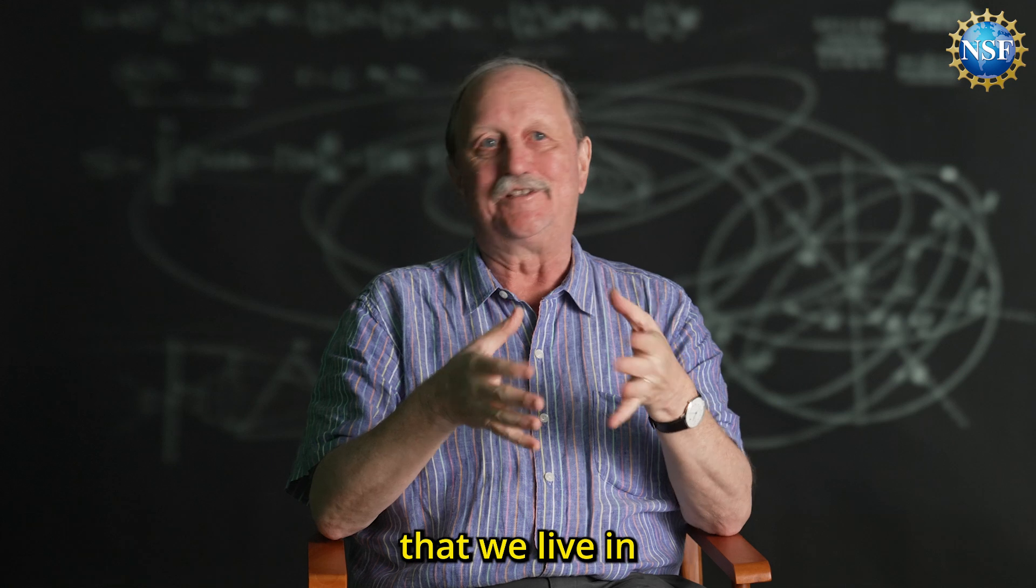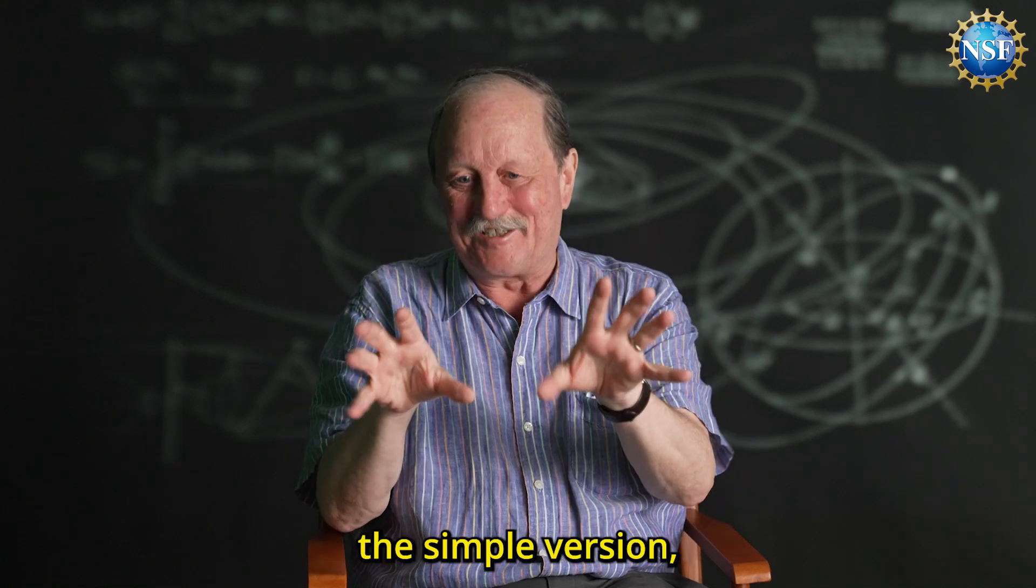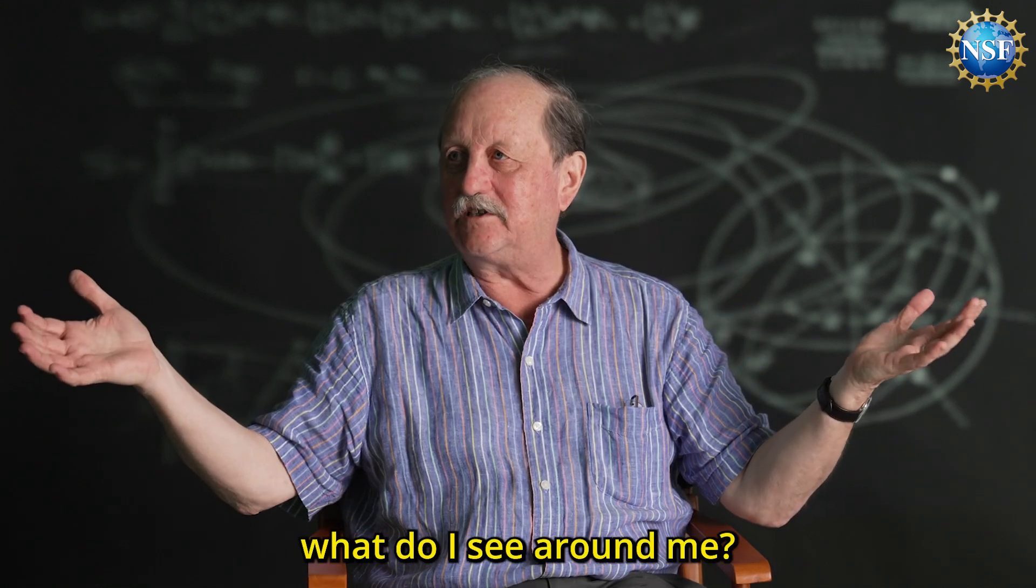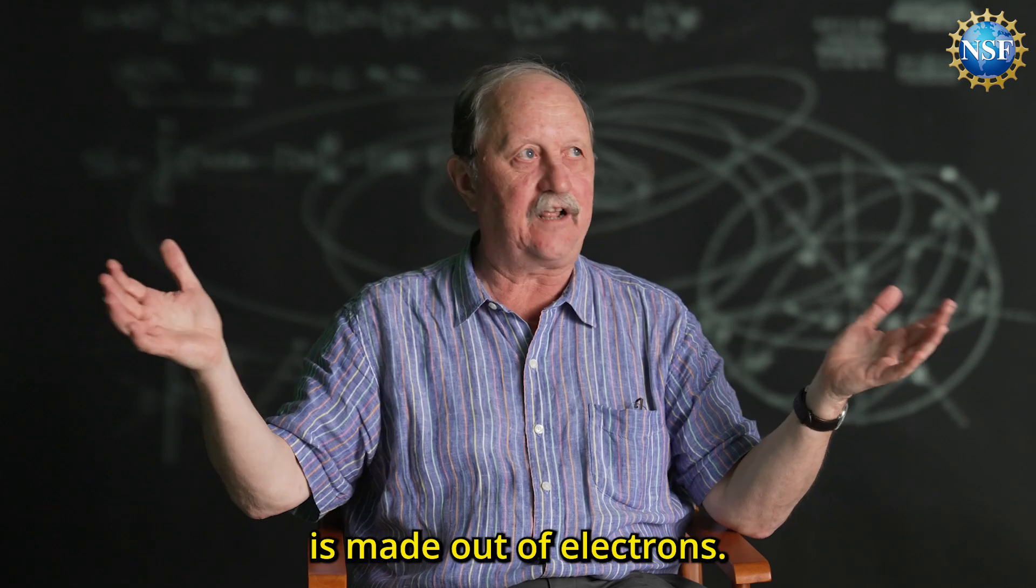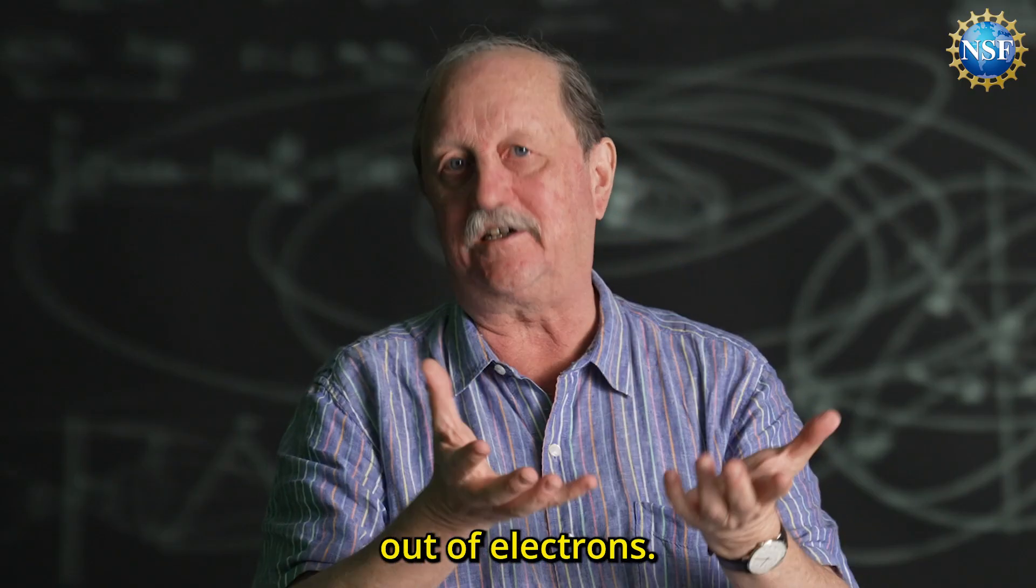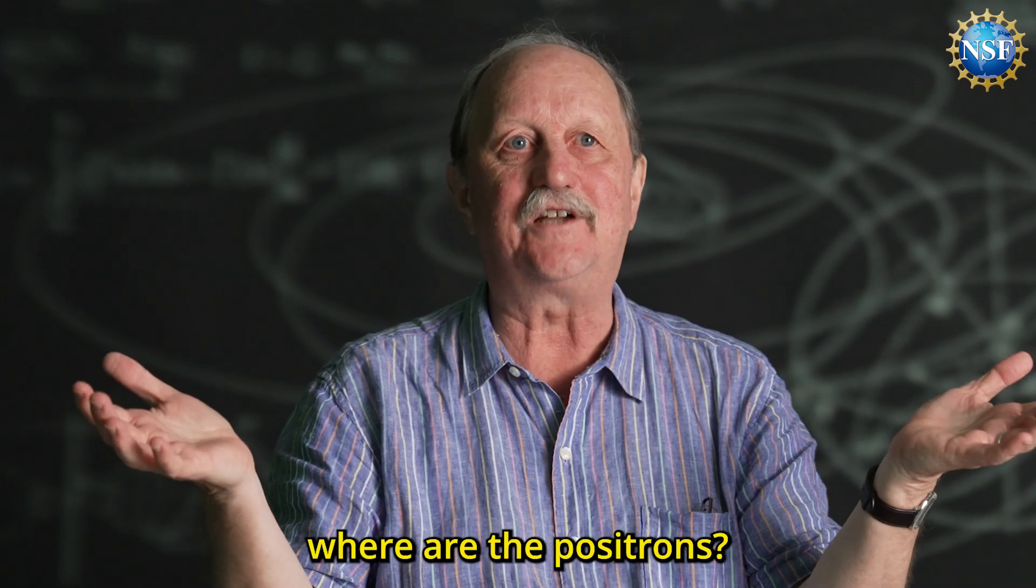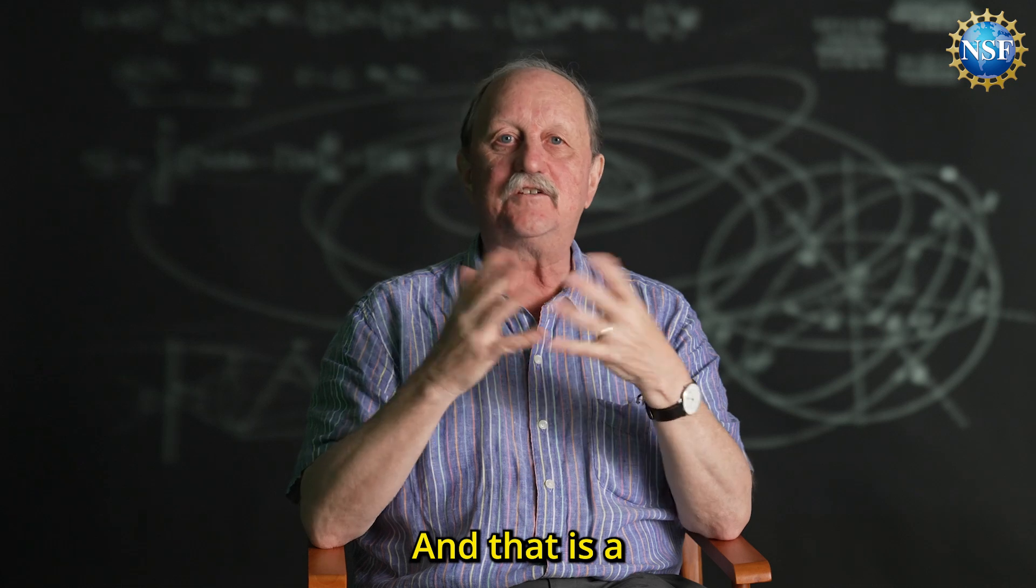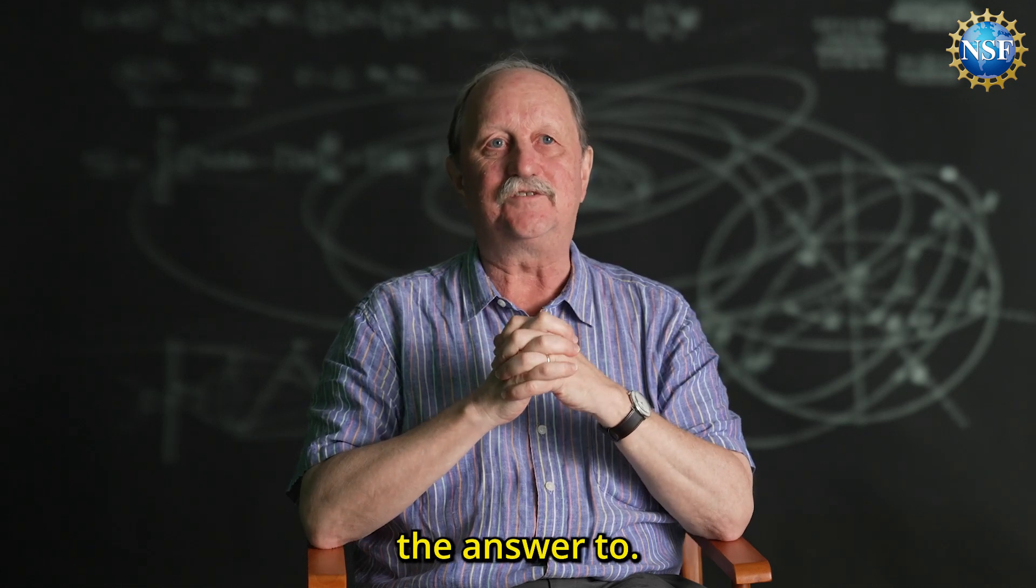But when we come back to the universe that we live in - not just the simple version - you look around and say, okay, what do I see? Everything you see is made out of electrons. Everything you touch is atoms made out of electrons. And you say, well, where are the positrons? Weren't they all produced at the same time? That is a very profound question that we don't know the answer to.